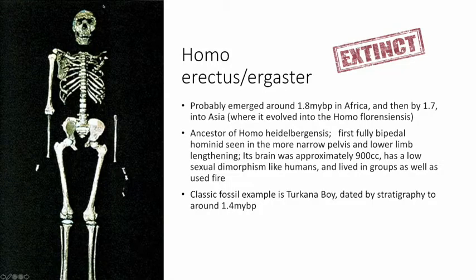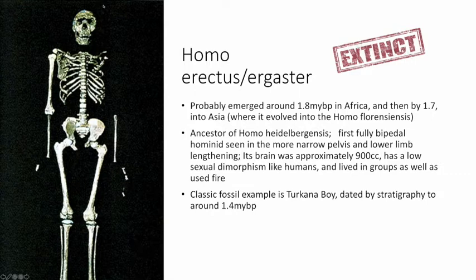If we keep going back, we see Homo erectus, or Homo ergaster. Both of those names are currently being argued — for a lumper, one species; for a splitter, two distinct but closely related species. Homo erectus and ergaster probably emerged around 1.8 million years before present in Africa, and then very quickly radiated into Asia, where we've learned about Homo floresiensis — the hobbit — in Southeast Asia, which would be the ancestral species.